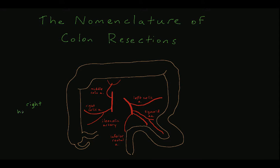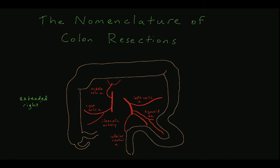A right hemicolectomy requires ligation of the ileocolic artery, the right colic artery, and the right branch of the middle colic artery. With this resection, the length of the colon from the cecum to the proximal right-sided transverse colon is removed. An extended right hemicolectomy is similar to the right hemicolectomy, except in this operation the middle colic artery is divided at its base, effectively ligating the right and left branches. This modification allows for a greater length of transverse colon to be resected.